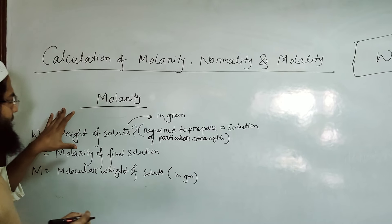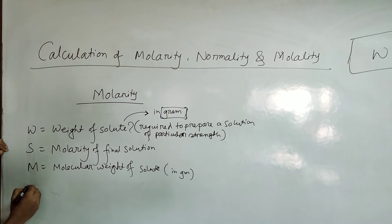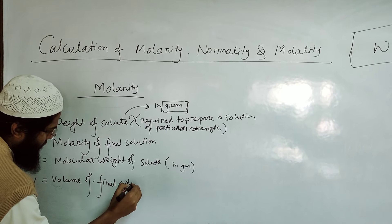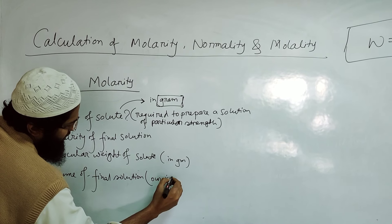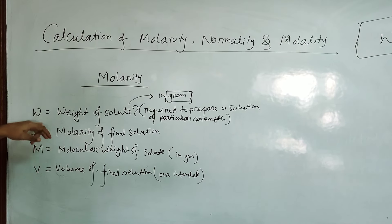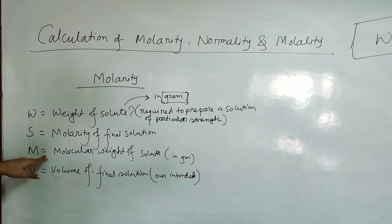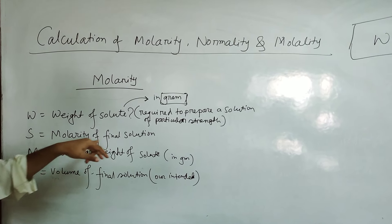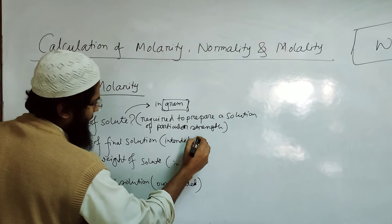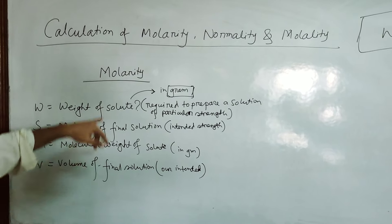W is always in grams. In this equation, the unit for the answer is grams. B is the volume of the final solution — our intended solution. This is the amount we are going to prepare. S is the molarity of the final solution, that is our intended strength. These are the parameters for the calculation of molarity using the equation W = SMB / 1000.